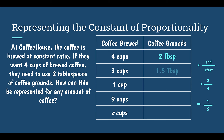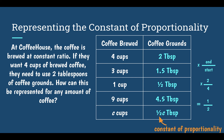Three times one half is 1.5. One times one half is one half. Nine times one half is four and a half, 4.5. For the last entry, C: think about what I had to do to every other number on the left to get the one on the right — I just multiply it by the constant of proportionality. So C times one half gives me one half C. The number in front of my variable is my constant of proportionality, and C is the number of cups. Whatever that large unknown number of cups is, I just multiply it by one half to get my number of coffee grounds.